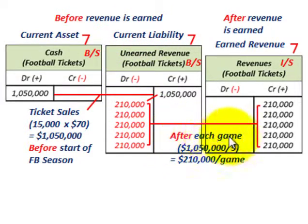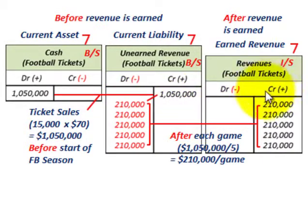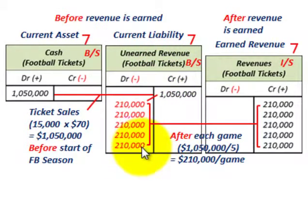Now let's look at what we would do after each game. We have five games in the season and received a total of $1,050,000. If we divide that between the five games, we get $210,000 per game in revenue. So after each game, on our current liability unearned revenue account, we'd debit that for $210,000 for what we earn in revenue for each game. And then the corresponding credit on our revenues account on our income statement, we would credit that for $210,000. So over five games, we reduce our unearned revenue account by $210,000 each, and credit our revenues account for $210,000 per game.